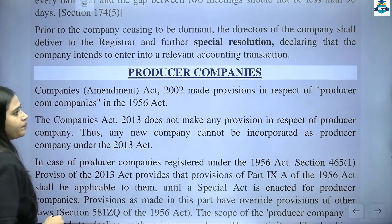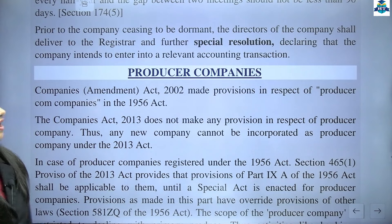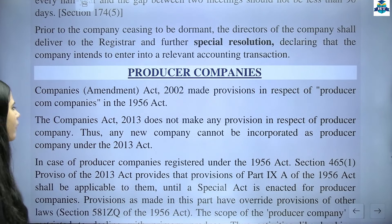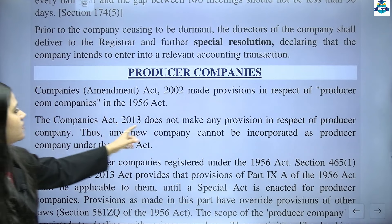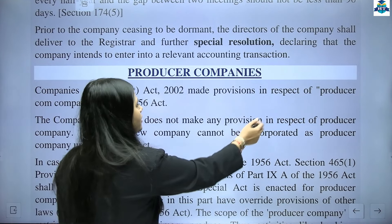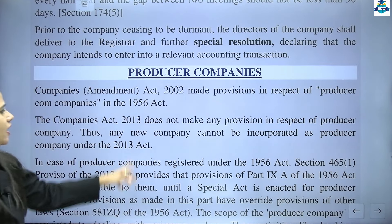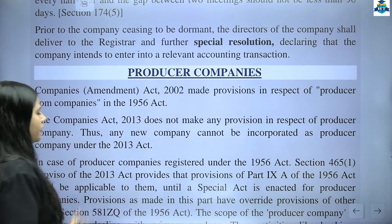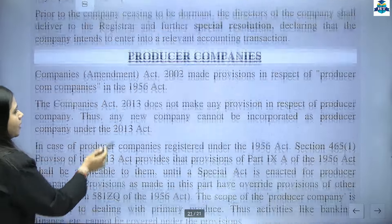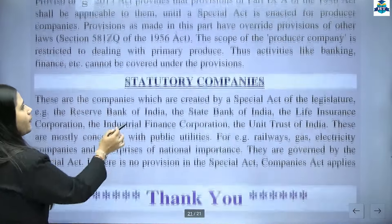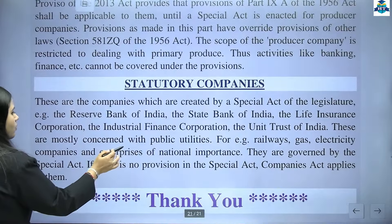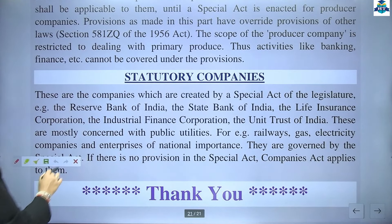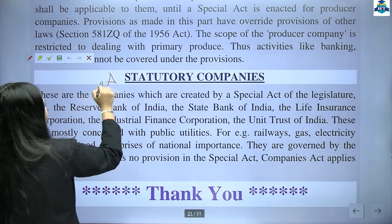Regarding producer company — this concept is completely irrelevant and has been scrapped. The Companies Act 2013 does not make any provision in respect of a producer company. Thus, any new company cannot be incorporated as a producer company. Since there is no name or trace of this company left, we do not need to study this concept.